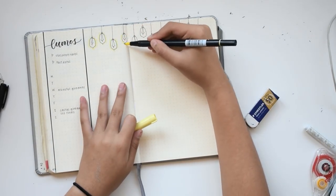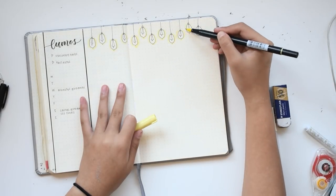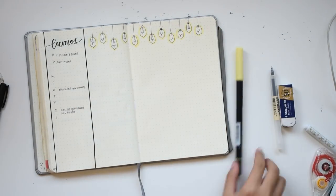Again, I'm using that same yellow brush pen to make the glowy effect on the light bulbs and to make dividers on the weekly page.